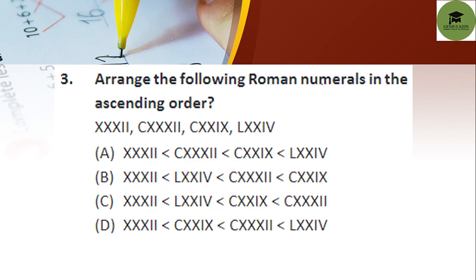Question 3: arrange the following Roman numerals in ascending order. We need to find the value of each. X represents 10, so XXXII is 32. C means 100 and L represents 50.